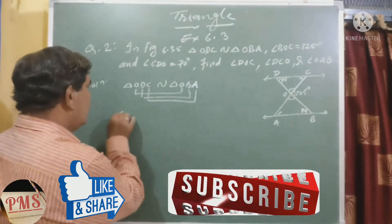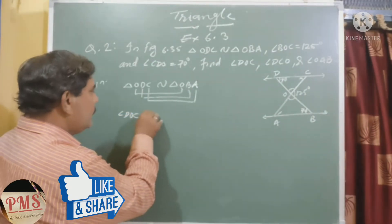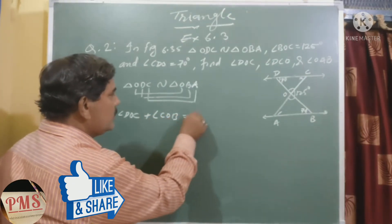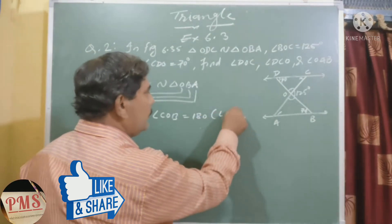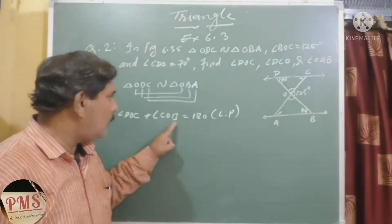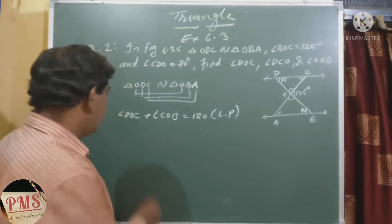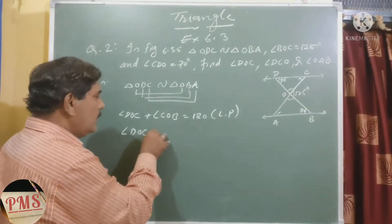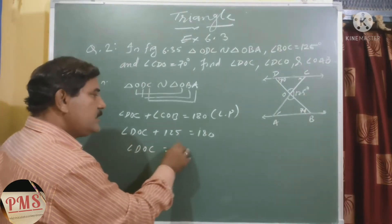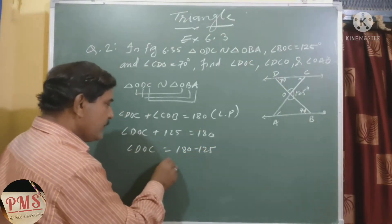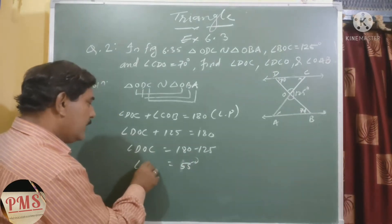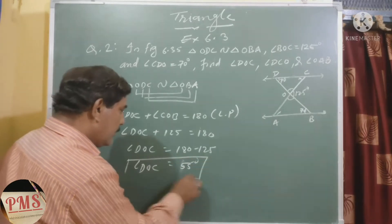So angle DOC is equal to 180 minus 125, which gives us 55 degrees. Therefore, angle DOC equals 55 degrees.